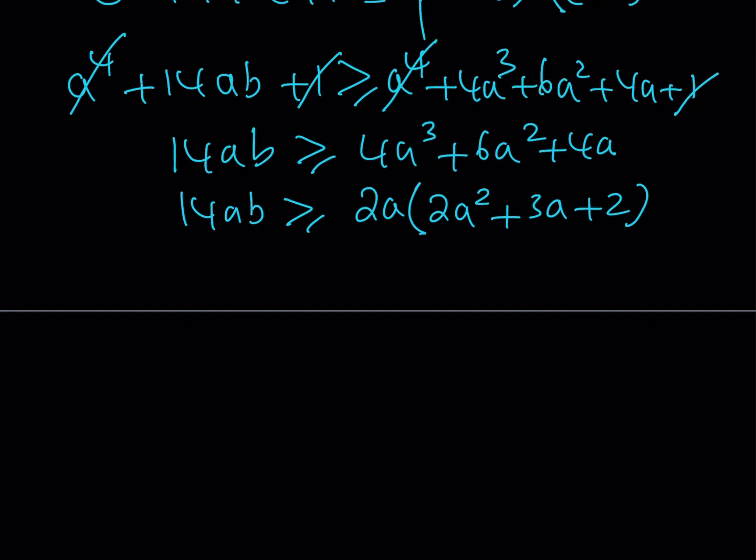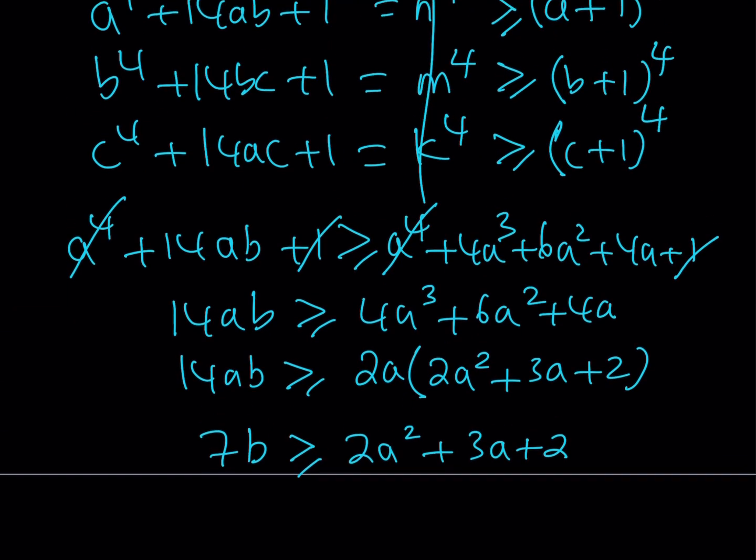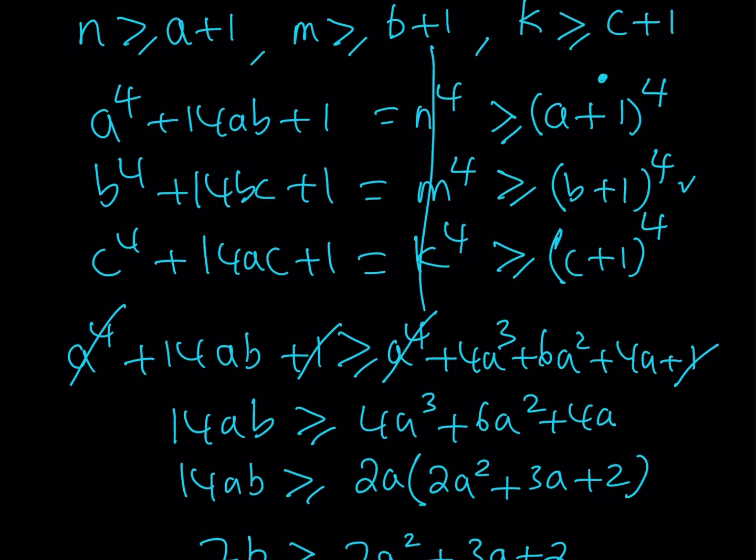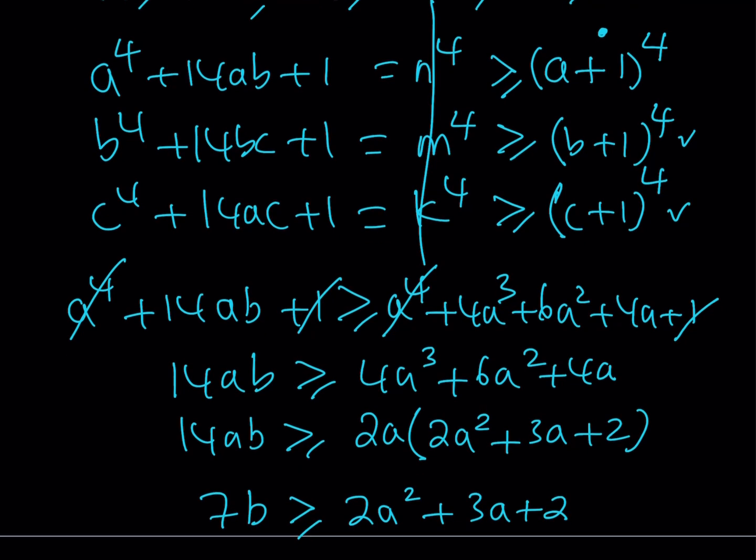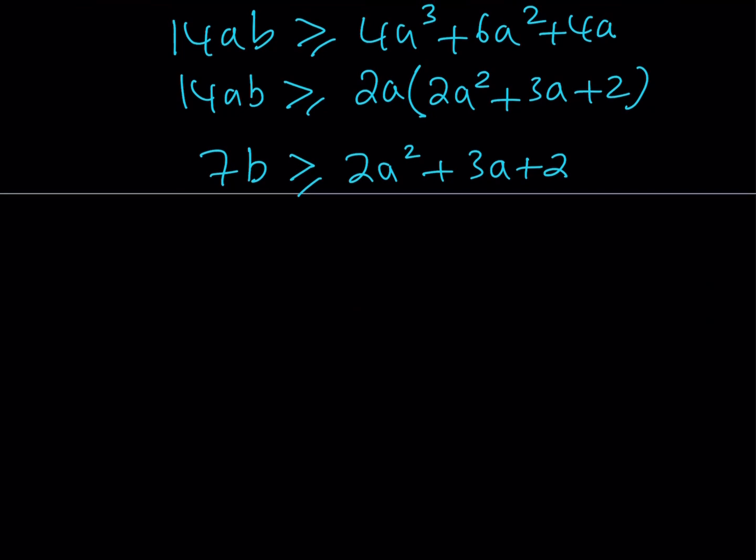Now, we can divide both sides by 2a. Notice that a is not 0, it's a positive integer. If we divide both sides by 2a, you get 7b is going to be greater than or equal to 2a squared plus 3a plus 2. And similarly, whatever we did for the first equation, we can do for the second equation and the third one. So the second and third one is going to give us something similar to this, and it's going to look like 7c is greater or equal to 2b squared plus 3b plus 2, and then with the 7a, we're going to get greater or equal to 2c squared plus 3c plus 2.